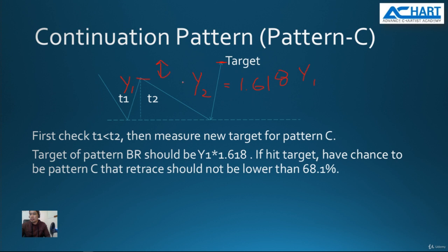If it hits the new target, it has a chance to be pattern C. The retrace should not be lower than 61.8 percent. What we mean by this is that after it hits the target, it has the potential to retrace at 61.8 percent of y2.